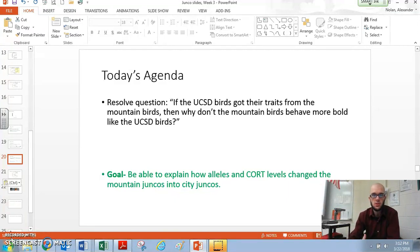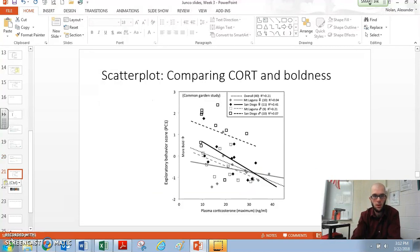In order to do this, what we have to do is explain what's called alleles and CORT levels in our birds. We need to talk about how did these two different kinds of birds evolve? How did our mountain birds become city birds? So I want to jump back and look at this graph that we referred to in a previous video.